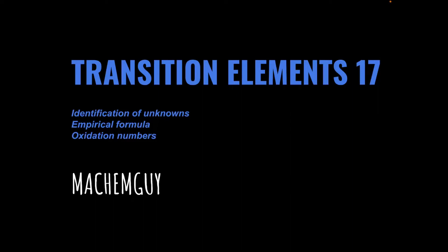I've got another question for the transition elements playlist, covering the identification of unknowns, empirical formula, and oxidation numbers. As always, the link to the questions is in the description if you want to try it first.